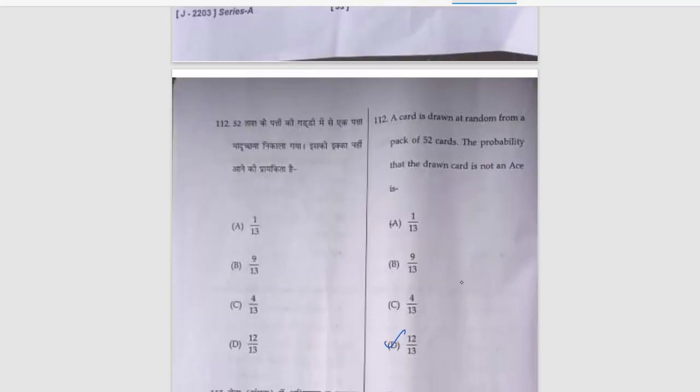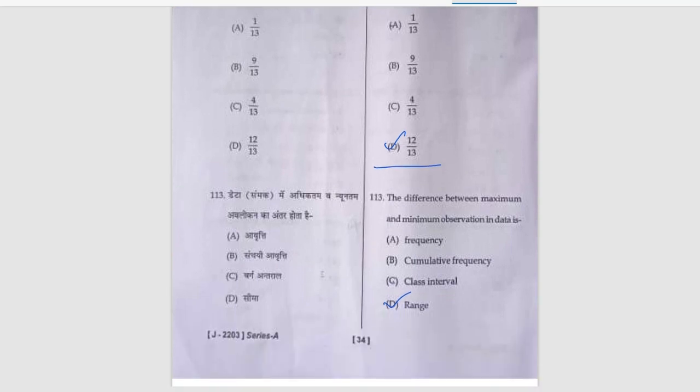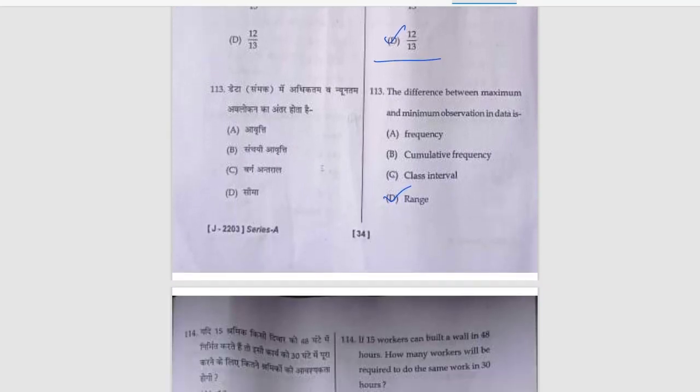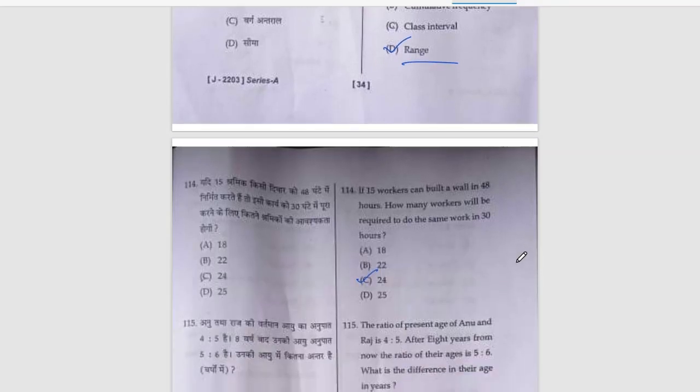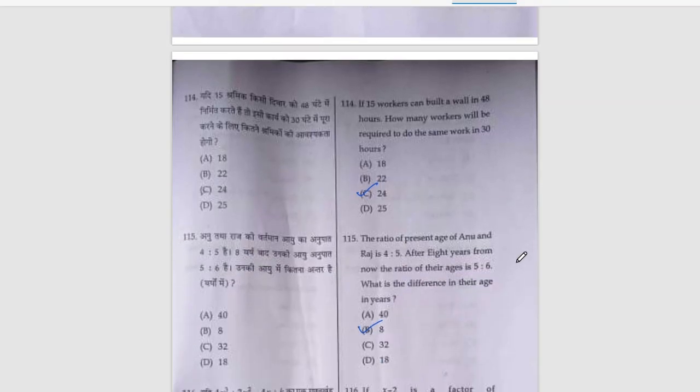How many faces are in a hemisphere? That is option number A, 1. A card is drawn at random from a pack, that is also 12 upon 13, option number D is correct. The difference between maximum and minimum observation is range, option number D.